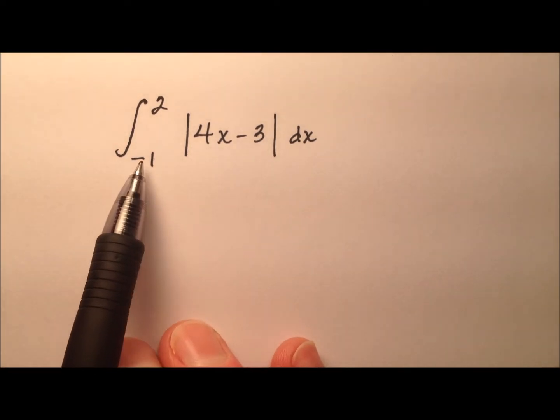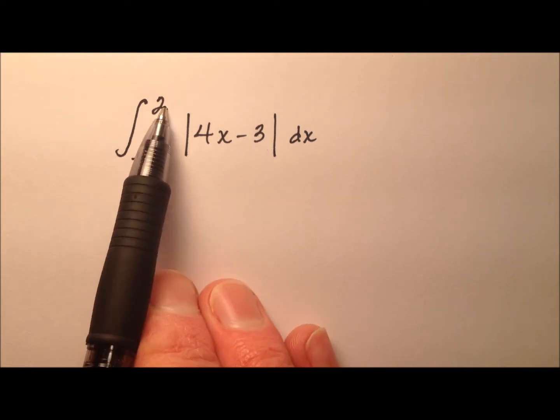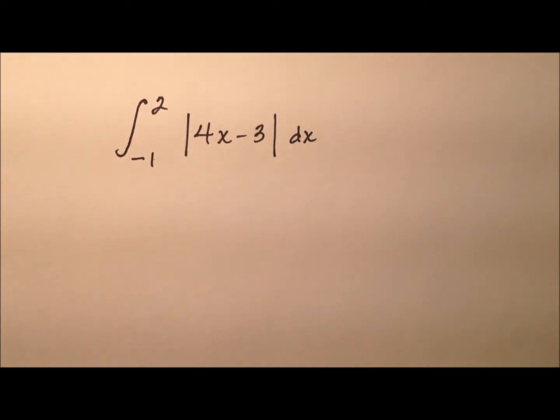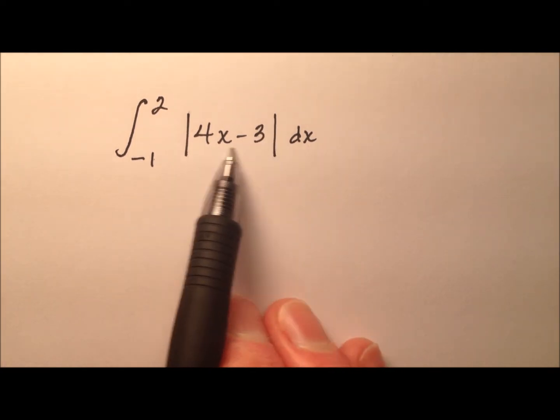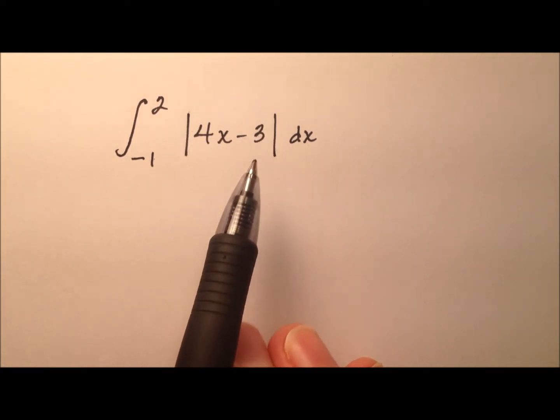So here in this example, our limits of integration are from negative 1 to 2, and of course that's with respect to x, and our integrand is going to be this absolute value of 4x minus 3.